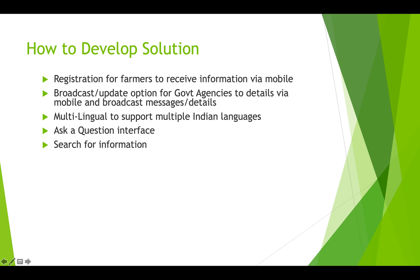What we are expecting in this solution is a registration interface for farmers — a one-time activity — who can register via mobile or via the web portal. Broadcast updates from government agencies when there is a major pest attack or flood warning go back to farmers who can take the right precautions. Multilingual support so that farmers across different cities and states can use it. An ask-a-question interface as intelligent as a bot, which can give information at the tip of a question as soon as it is asked. A search interface by which they can search for information and view it. In short, this farmer's friend portal is going to help the agricultural community be well prepared and have higher produce and profitability.